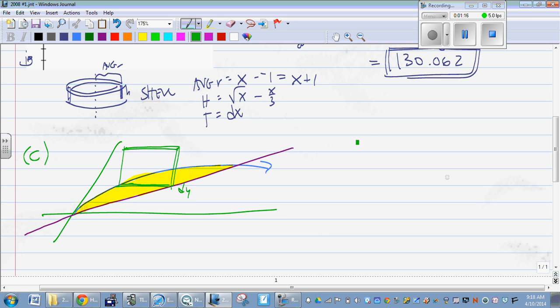And for these cross-section problems, we're just taking the definite integral from a to b of the area. So in this case, it's the area in terms of y times the thickness dy. And we're just adding up the area of all of those square prisms.